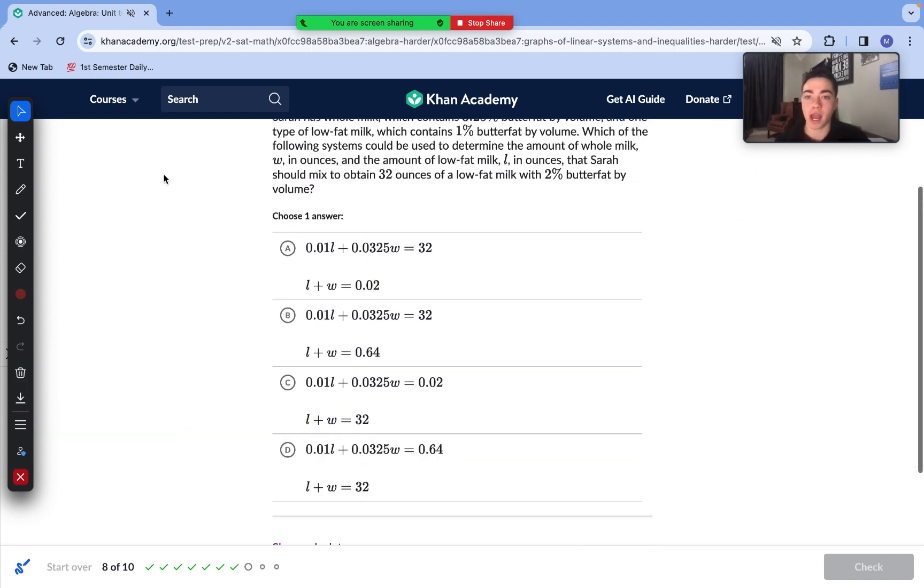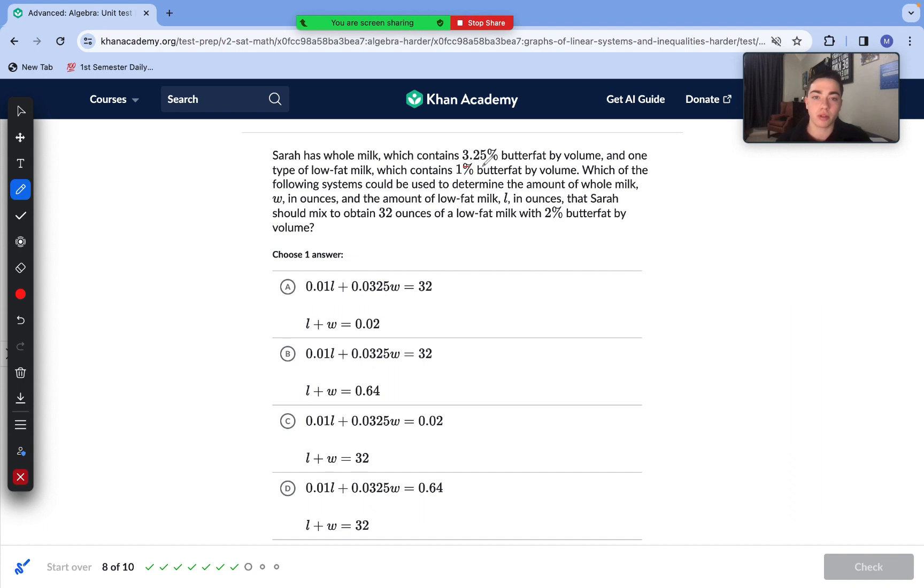Moving to question number eight. Sarah has low fat milk which contains 3.25% butterfat by volume. One type of low fat milk which contains 1% butterfat by volume. Which of the following systems could be used to determine the amount of whole milk W in ounces and the amount of low fat milk L in ounces that Sarah should mix to obtain 32 ounces of a low fat milk with 2% butterfat by volume? First step here is to set up our inequalities in a way that makes sense. Of course, right off the bat, we can see that if L + W is going to be equal to such a low amount, L and W, the variables would have to be extremely low themselves, which just wouldn't make sense if we had to multiply them by something and it would reach 32. So we can instantly eliminate both B and A. With answer choice C, we have 0.01L + 0.03. Even if L and W were greater than 1, of course they are if they total to 32, while 0.01 + 0.0325 is 0.0425, which is greater than 0.02. That also eliminates C from contention.